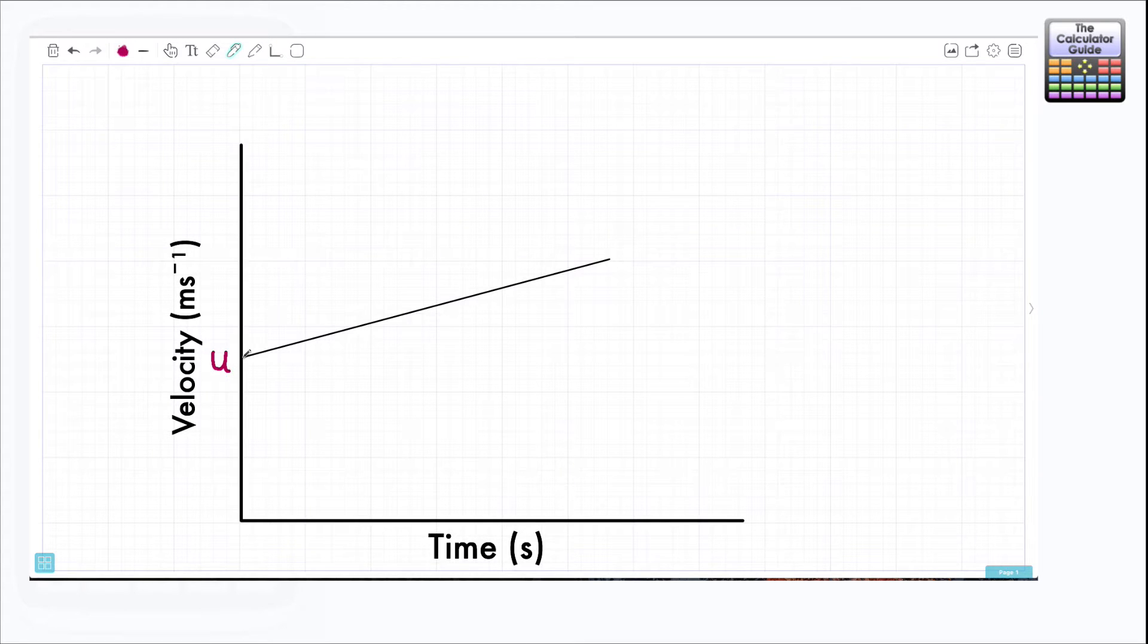We have our initial or starting velocity of u and we can see that this line represents an increase in the velocity up to the final velocity which we'll use the letter v for. I should just label zero on the graph. Across the x-axis here we have the time period for which this graph is relevant so I'm going to label that with a lower case letter t.